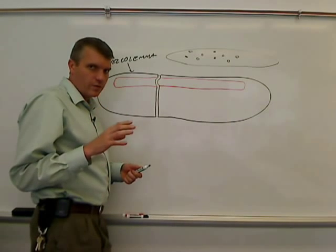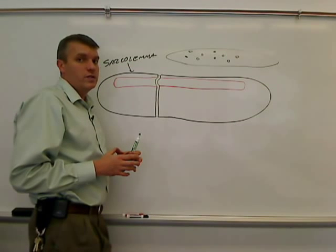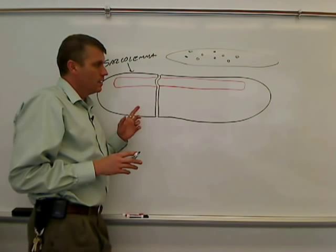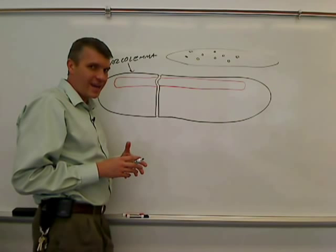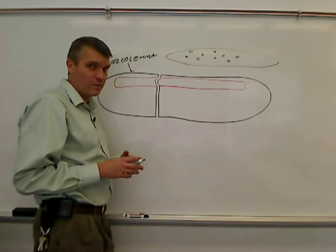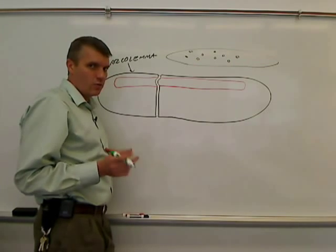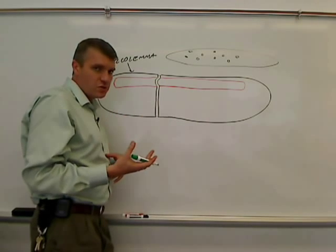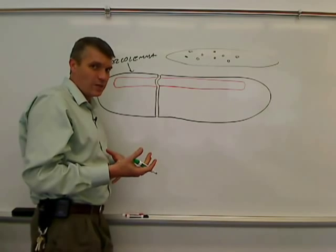You may recall from when we talked about the anatomy of the cell in the beginning of the semester, we talked about endoplasmic reticulum. The sarcoplasmic reticulum in a muscle cell is kind of like endoplasmic reticulum, smooth endoplasmic reticulum. But it's different in that it's not in one specific location. It's throughout the muscle fiber. And its major job in terms of how the muscle works is to store calcium.